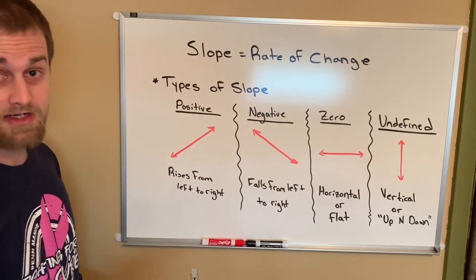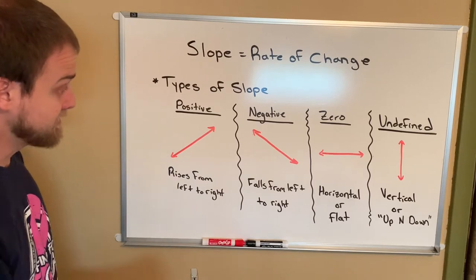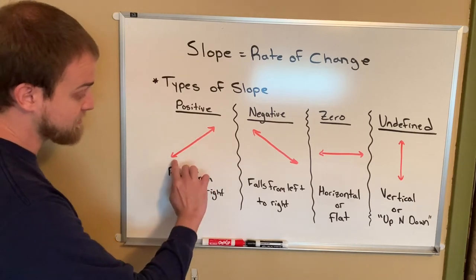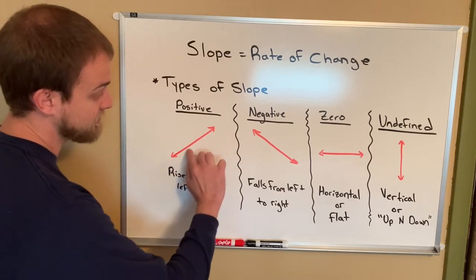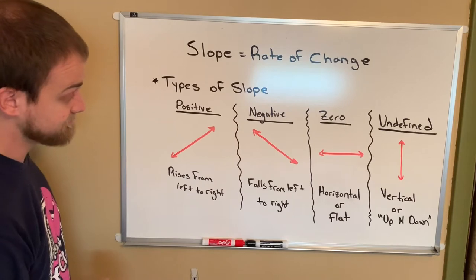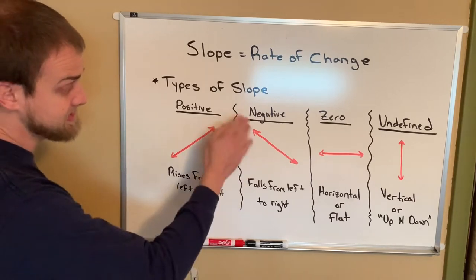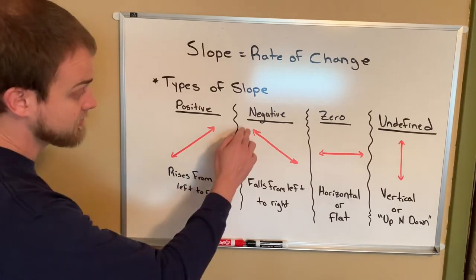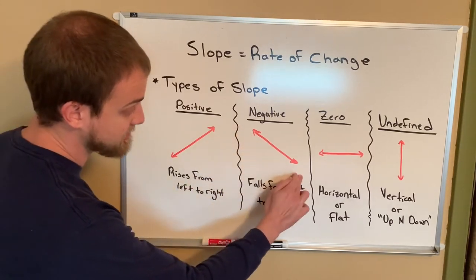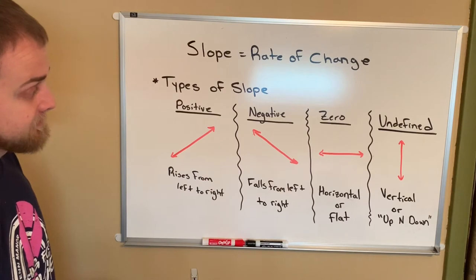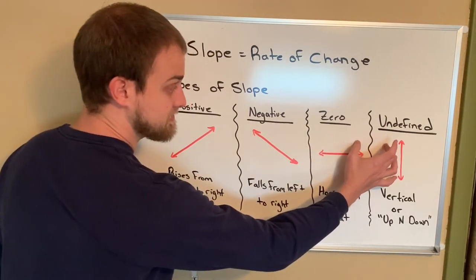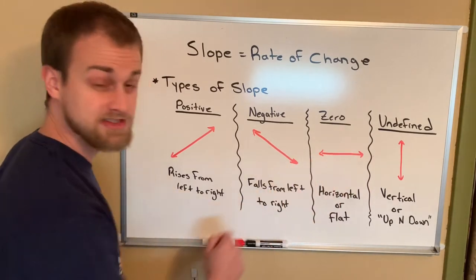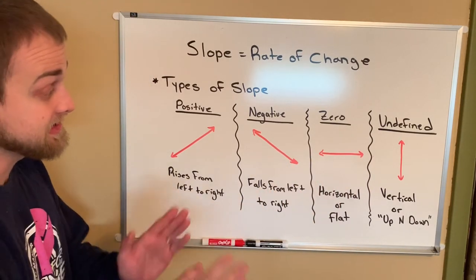There are four that we're going to consider for today's lesson. First off, we have positive slope. So here's our line. We know it's positive because as we go left to right, my line rises. Negative slope falls as we go left to right. Notice that it starts up here and decreases as it goes left to right. Now these two often get confused just because they're very similar in nature as far as what the lines look like and they're very easy to get swapped.